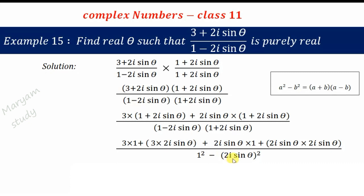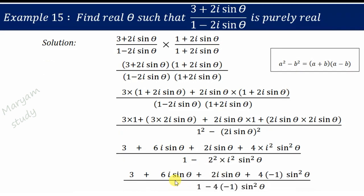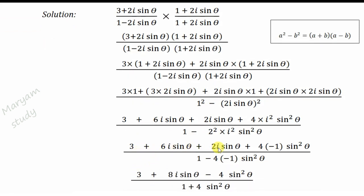Expanding: 3×1 = 3, plus 6i sinθ, plus 2i sinθ, plus 4i² sin²θ. The denominator becomes 1 − 4i² sin²θ. Substituting i² = −1, the numerator becomes 3 + 8i sinθ − 4sin²θ, and the denominator becomes 1 + 4sin²θ.